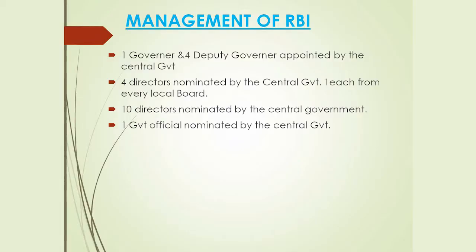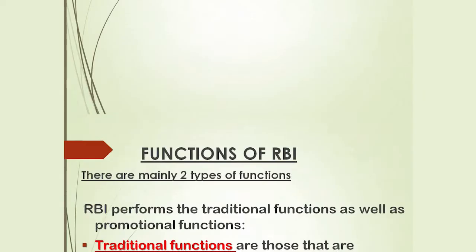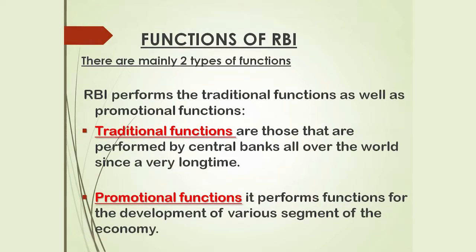Next, the management of RBI. The management of RBI involves one Governor and four Deputy Governors appointed by the central government, four directors nominated by the central government, one each from every local board, ten directors nominated by the central government, and one official nominated by the central government.